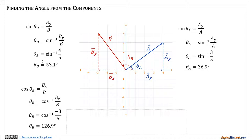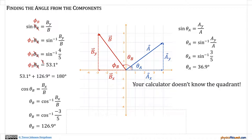Notice that 126.9 and 53.1 degrees add up to 180 degrees, within rounding. What happened is that when I used the y component, I wasn't actually finding theta-b — I was finding phi-b, the interior angle of the right triangle. You have to be really careful when your vector is not in the first quadrant. If I needed the angle back from the original x-axis I'd have to do extra math. The key problem is your calculator doesn't know what quadrant you're in, so be careful how you interpret its results.